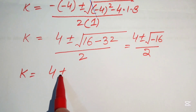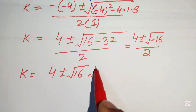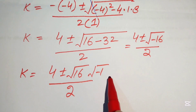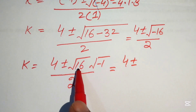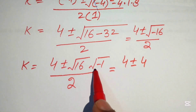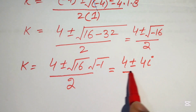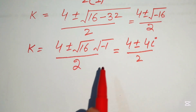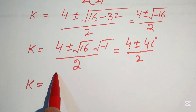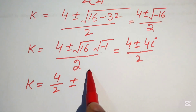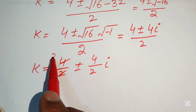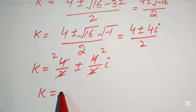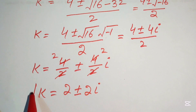We separate the square root: √(−16) = √16 · √(−1) = 4i. So k = [4 ± 4i] / 2 = 4/2 ± (4/2)i = 2 ± 2i. These are the two complex roots.